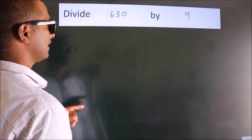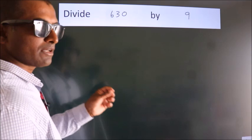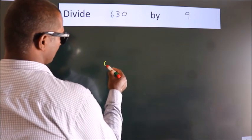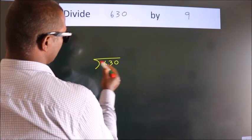Divide 630 by 9. To do this division, we should frame it in this way. 630 here, 9 here.